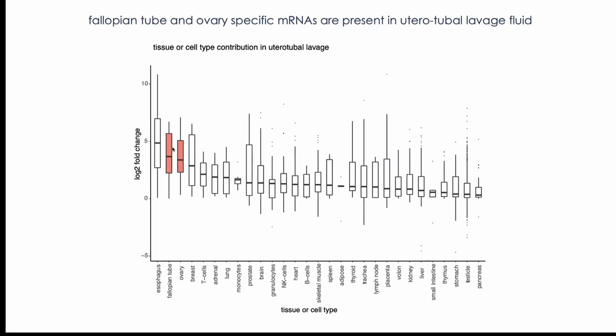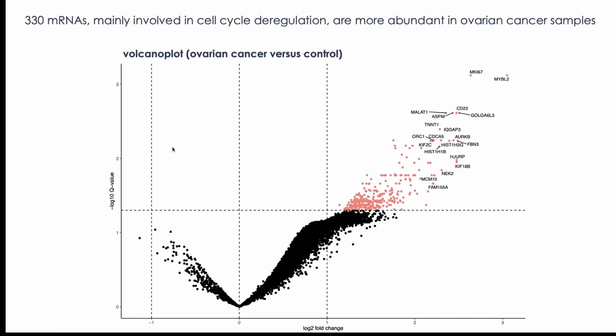We then profiled ovarian cancer cases and controls - approximately 20 patients versus 20 controls - and engaged in differential gene expression analysis. We detected a lot of RNA molecules significantly more abundant in uterotubal lavage fluid from ovarian cancer samples compared to healthy controls, including many RNAs associated with proliferation like Ki-67, aurora kinase, MCM10, and so on. Pathway enrichment analysis showed that cell cycle and proliferation gene sets were strongly enriched in fluids from ovarian cancer patients versus controls. We're following up on that to evaluate biomarker potential.